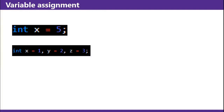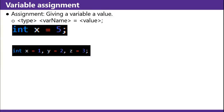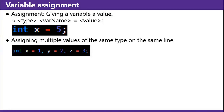Variable assignment. Assignment is giving the variable a value. The general format is: type, var name, equals, value, semicolon. Like the example below it — x equals 5.